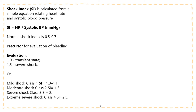You can also relate shock index to hemorrhage classes. A mild shock with class one hemorrhage has a shock index of 1.0 to 1.1. Moderate shock or class two hemorrhage has a shock index of 1.5. Severe shock or class three has a shock index of 2. Extremely severe shock or class four has a shock index of 2.5 and greater.